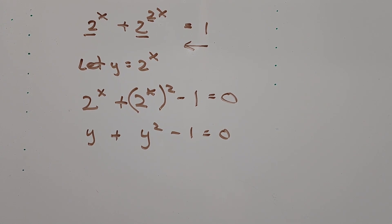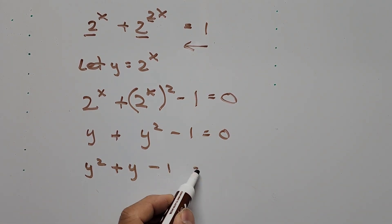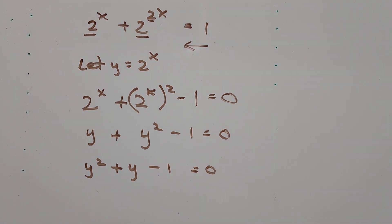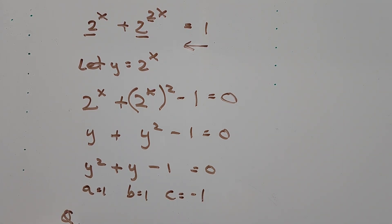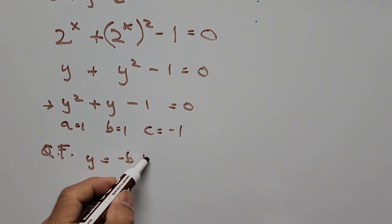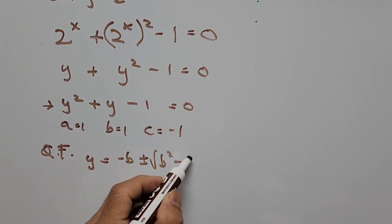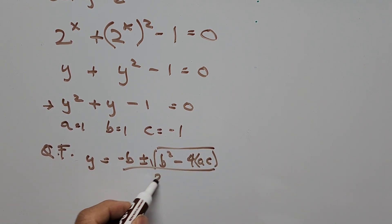The equation now becomes y plus y squared minus 1 equals 0, which is a quadratic equation. Arranging the terms, we get y squared plus y minus 1 equals 0. To solve for the value of y, we use the quadratic formula, where a is 1, b is 1, and c is negative 1. The quadratic formula gives y equals negative b plus or minus the square root of b squared minus 4ac, all divided by 2a.